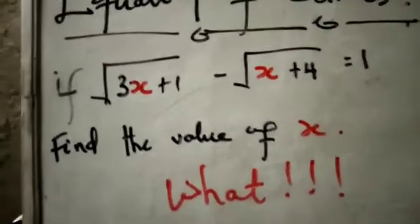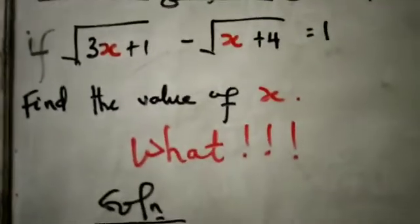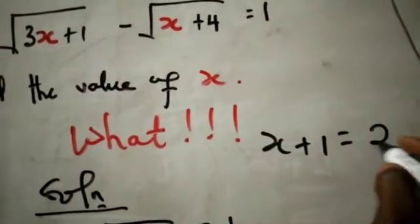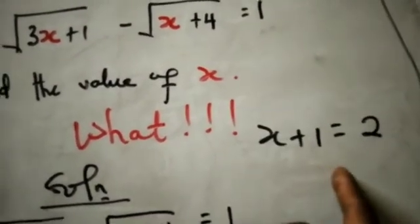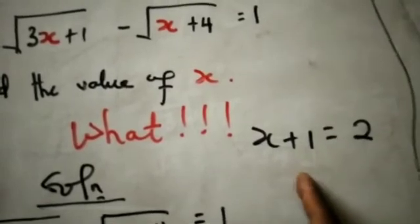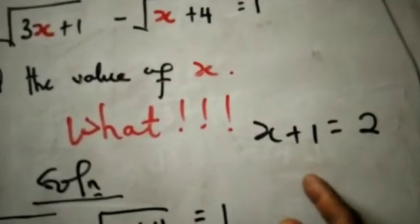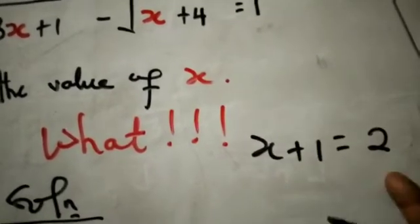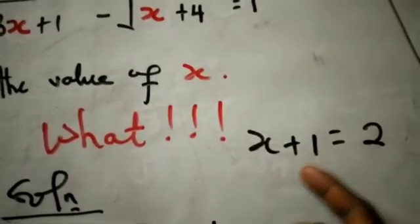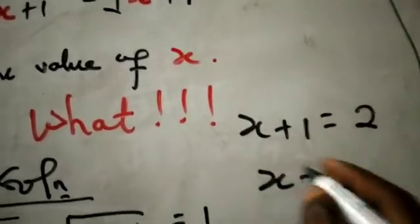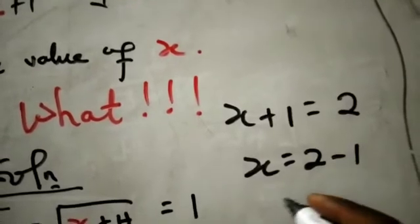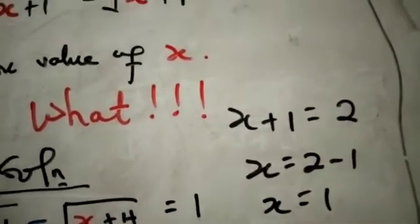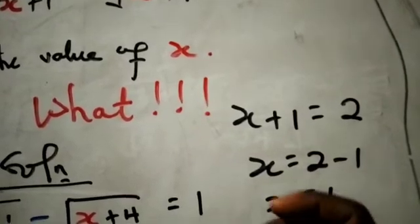For example, assume you have x + 1 = 2 and they say find x. This is a linear equation — you just subtract 1 from both sides, or move it to the other side, so x = 2 - 1, which gives x = 1. Very easy. That is how you solve a linear equation.